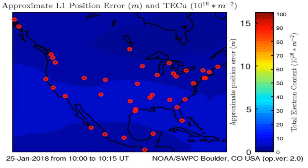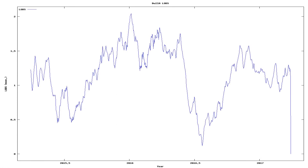Here we see the total electron content above the Earth. Anomalies in total electron content have sometimes preceded earthquakes below that area on Earth.